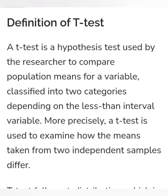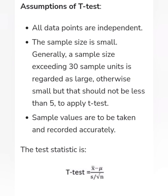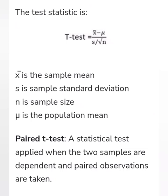If we have a sample size of 30 or below 30, we will use a t-test. This is a test which is used to test the hypothesis. Hypothesis is a statement. When we are doing research, we will test some tests. When the sample size is less than 30, the t-test can be used.